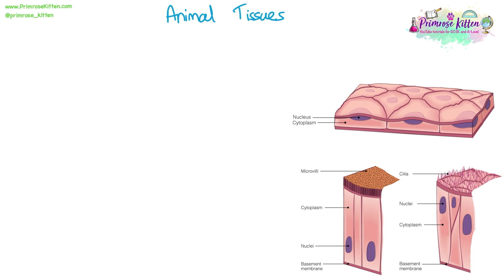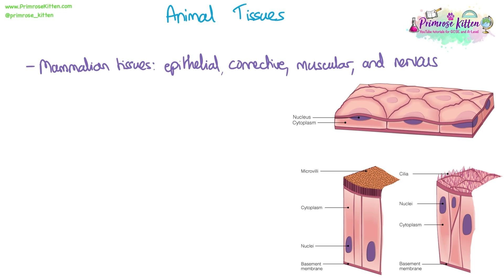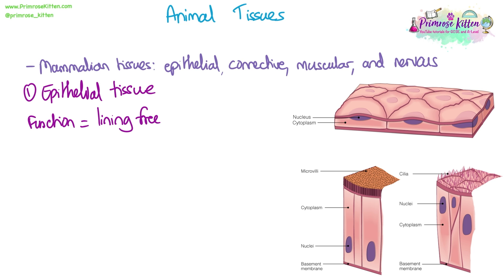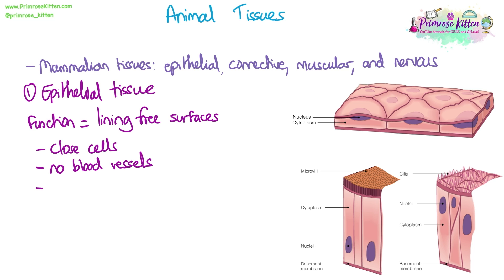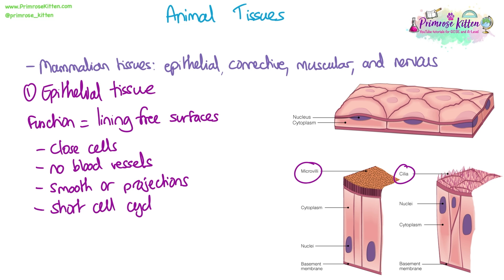Animal tissues. There are some examples of mammal tissues that we need to know: epithelial tissue, connective tissue, muscular tissue, and nervous tissue. The function of most epithelial tissue is lining free space in the body — anywhere where you have a lining that connects to the outside or the lining of a tube. The features of this tissue are that the cells are very close together, there are no blood vessels between the cells, and it can be smooth like squamous epithelium, or there can be projections such as microvilli or cilia. They have quite short cell cycles, meaning they are replaced quite quickly, and they can carry out a range of functions including absorption, filtration, excretion and secretion.